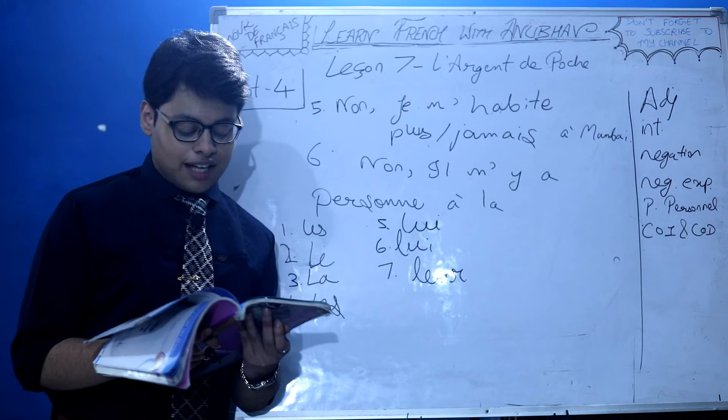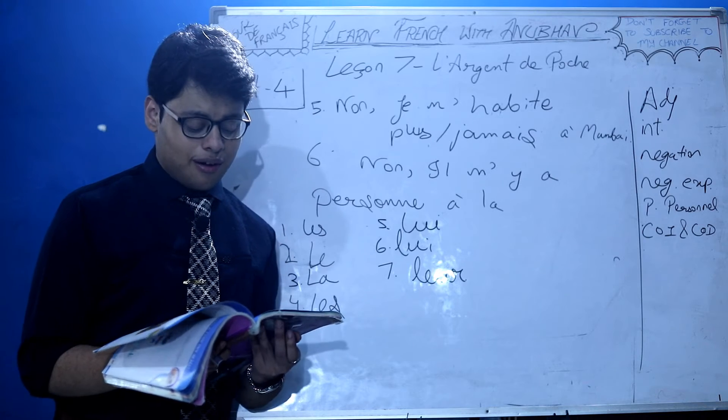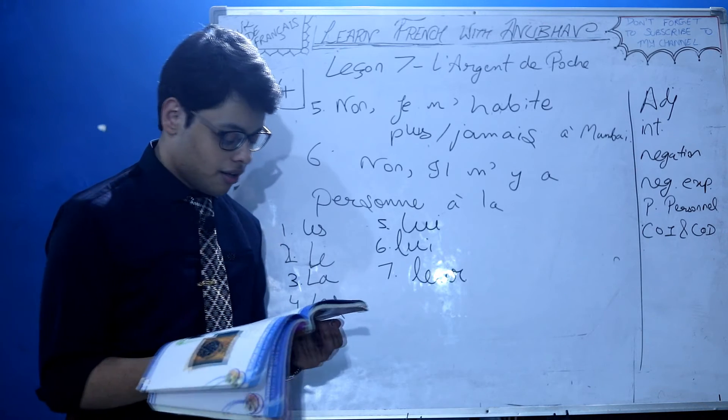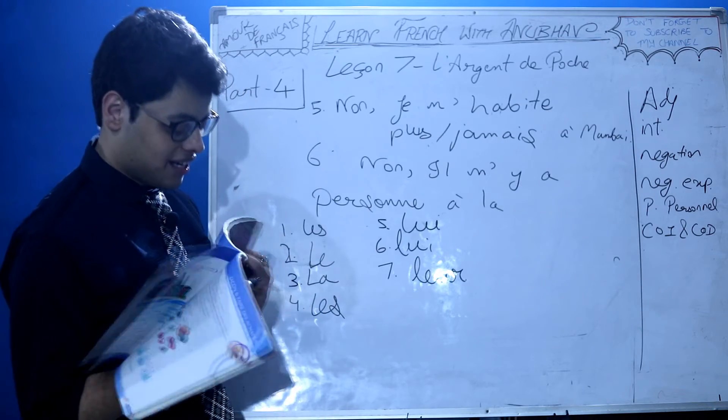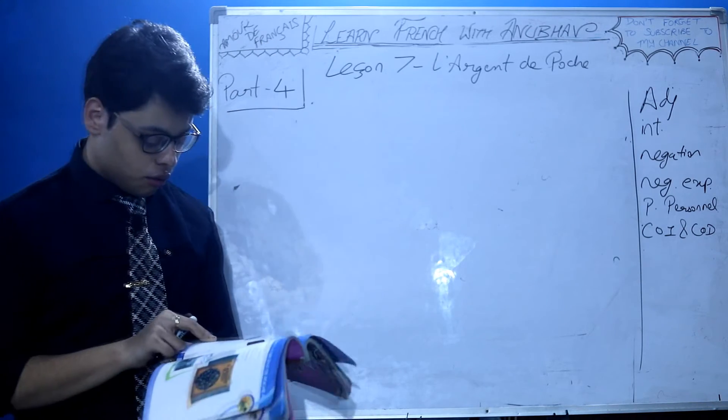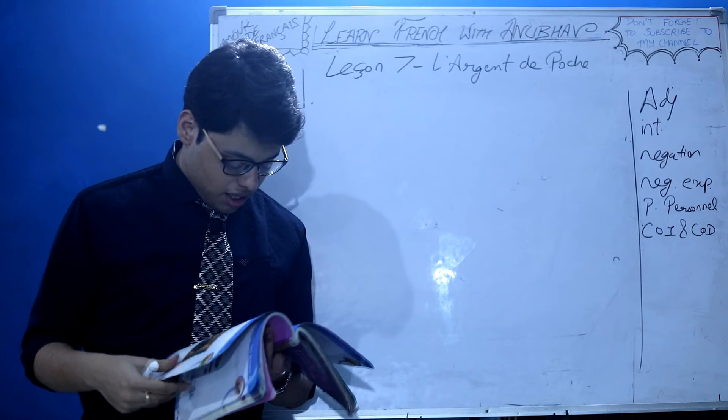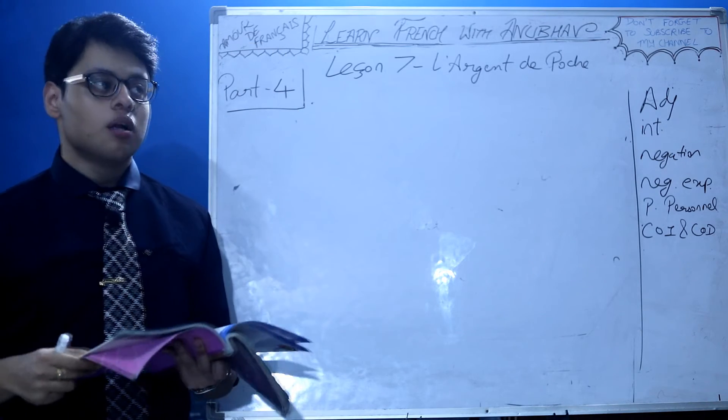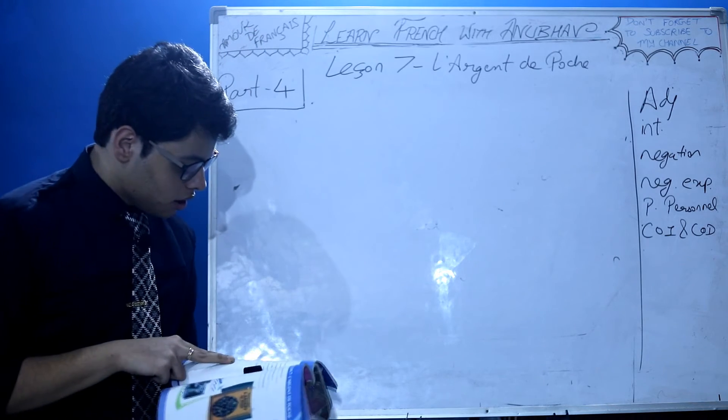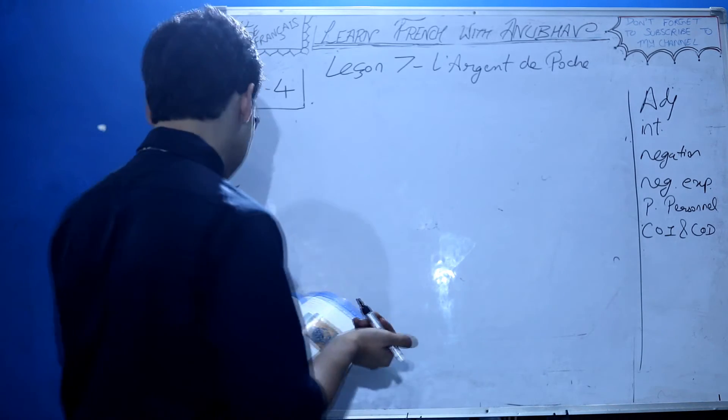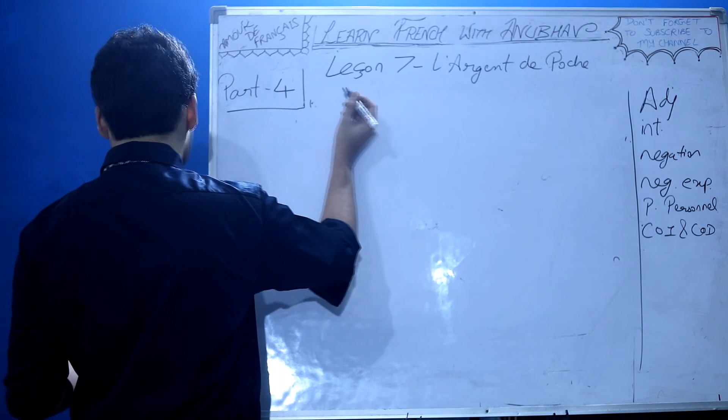Madame Martin is saying this. Both remaining questions are of pronoms personnels only - one is COI, one is COD. Basically, first one is indirect object and second is direct object.